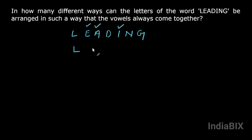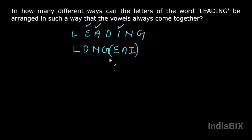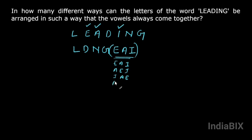Let us write the consonants on one side and the vowels on the other. The consonants are L, D, N, G and the vowels are E, A, I. We have to arrange the letters of this word such that these three vowels always come together in any order — it can be E-A-I, or A-E-I, or I-A-E, or A-I-E.